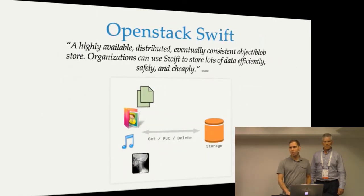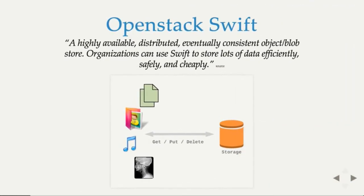Just a primer on OpenStack Swift for those that don't know. OpenStack Swift is a highly available, distributed, eventually-consistent object store. It's great for organizations that want to store their unstructured data, such as video, movies, x-rays, and medical data on a scale-out storage system.